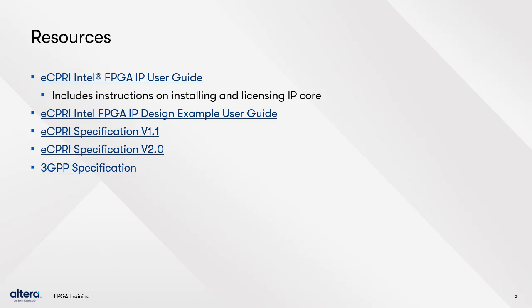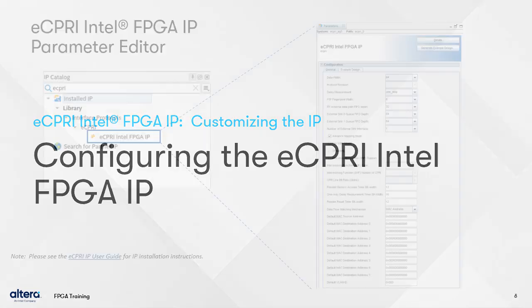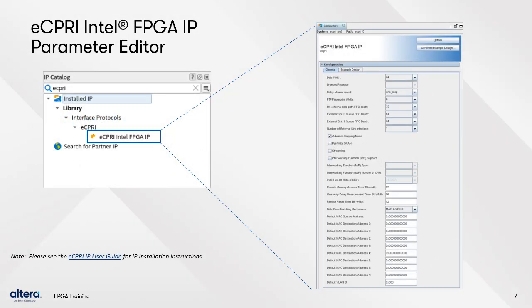This includes links to the eCPRI IP User Guide and the design example user guide. If you need to download and license the eCPRI IP, you can find information on this in the IP User Guide. Please note that the eCPRI IP core does not appear automatically in the Quartus software IP catalog — it is an extended IP core that requires a separate installation. See the eCPRI IP User Guide for instructions on how to install the IP.